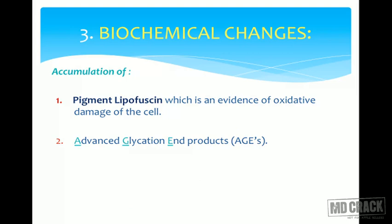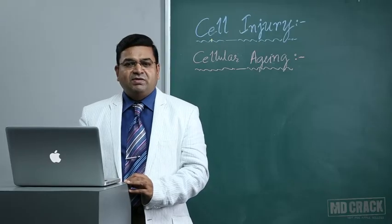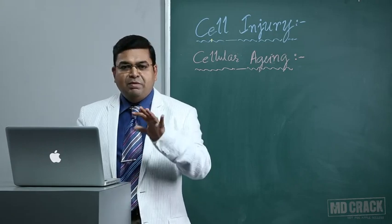As aging advances, there is accumulation of a peculiar pigment called lipofuscin, also called lipochrome or the wear-and-tear pigment, which appears within cells in a perinuclear position. It is evidence of oxidative damage to cells. There is also accumulation of AGEs (advanced glycation end products) and abnormally folded proteins. Chaperones are responsible for modifying and correctly folding proteins; if they are defective, abnormally folded proteins accumulate within cells.